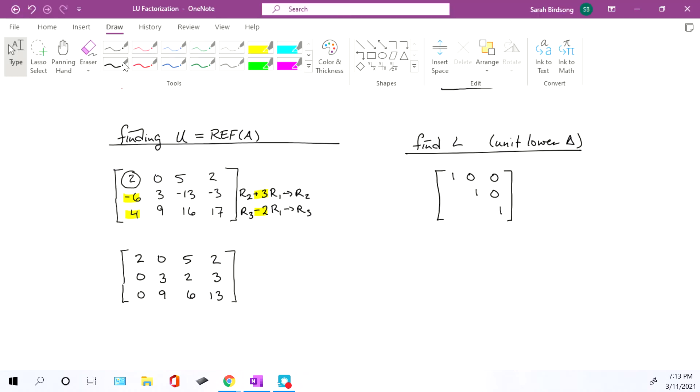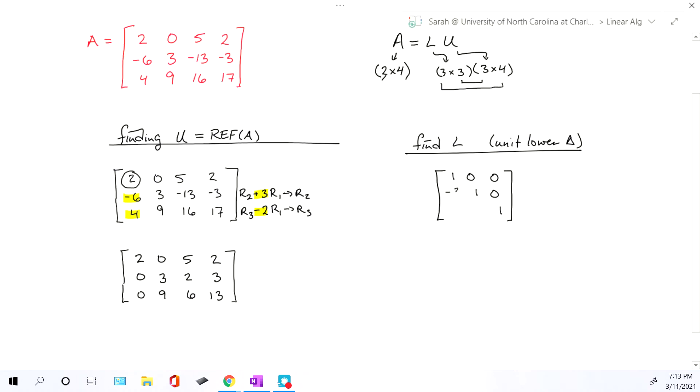So instead of having 3 and negative 2, we're going to write negative 3 and positive 2. Now, here's the other way. It doesn't matter which of these two ways you do. They both give you the same answer. The other way is you take the numbers that were highlighted, the numbers below the pivot that you mucked around with, and you divide them by whatever the pivot is. So here, this would be negative 6 divided by 2. That gives you the negative 3. This would be 4 divided by the 2, the 2 that's the pivot. That would give you the number 2. Both those ways work identically the same.